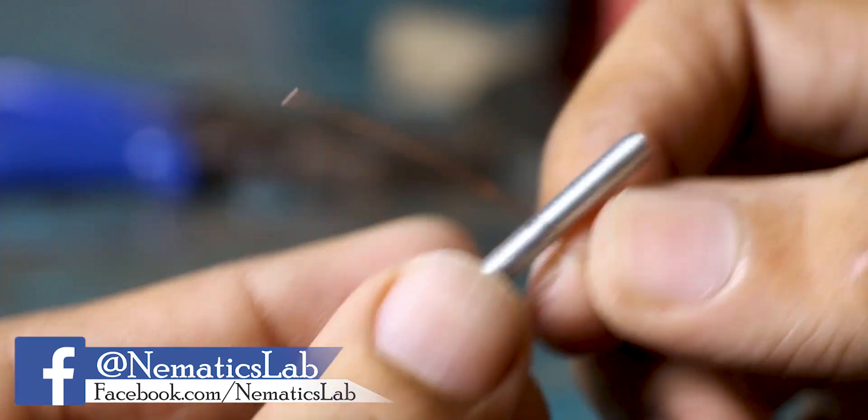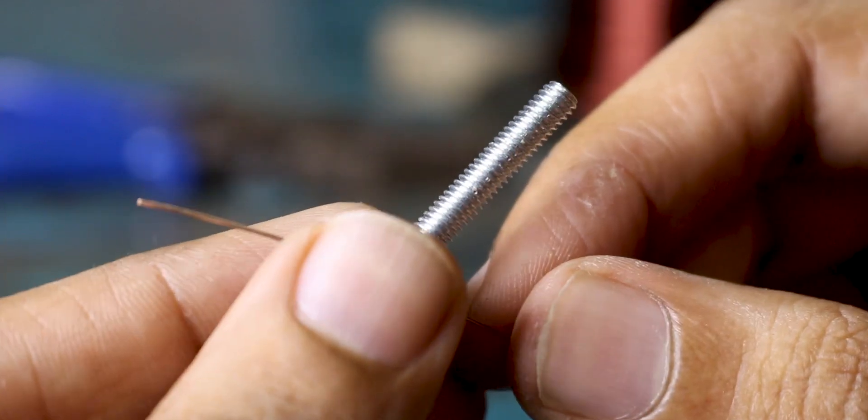Once that is done, use a bolt with 3mm diameter and make a spring of about 3cm in length.